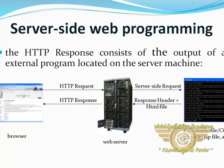This is a view of server-side web programming. The three main topics are: browser, web servers, and CGI code or a CGI file. The HTTP response consists of the output of an external program located on a server machine. Here we can see that an HTTP request goes from the browser to the web server, and the web server sends a request to the CGI file or CGI code. In return, the CGI program responds with a header plus HTML file to the web server, which sends an HTTP response to the browser.